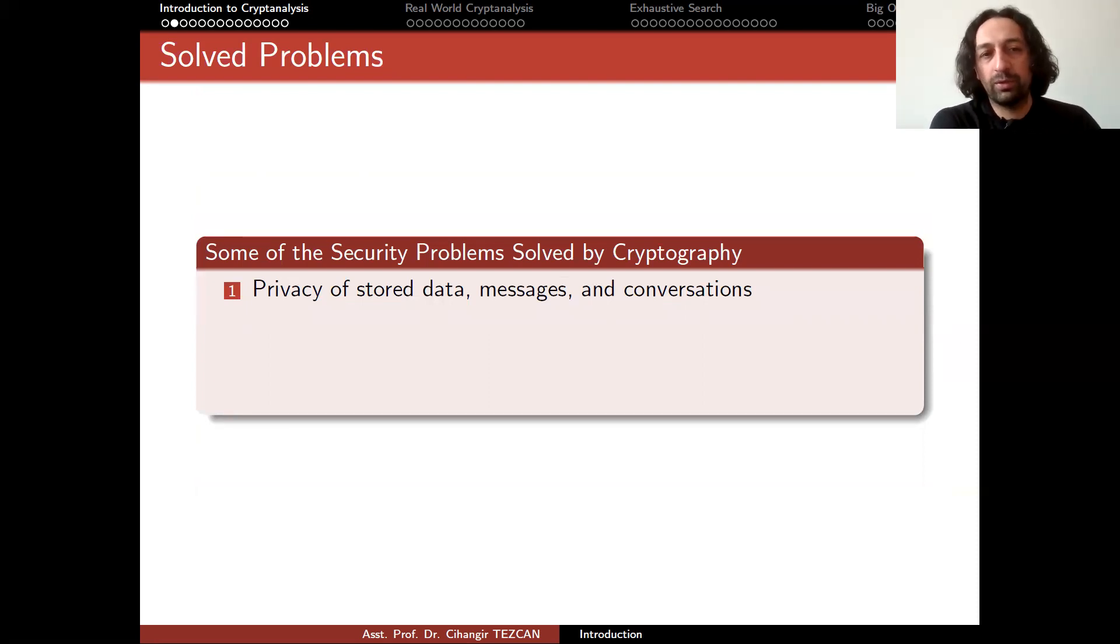Cryptography solves a lot of problems. One of the solved problems is the privacy of stored data, messages and conversations. As you can guess, we do this by encryption. So once we encrypt messages or conversations or data on a disk, we provide privacy. These will be the cryptosystems that we are going to break most of the time in this course. If we can break them, then the privacy is lost.